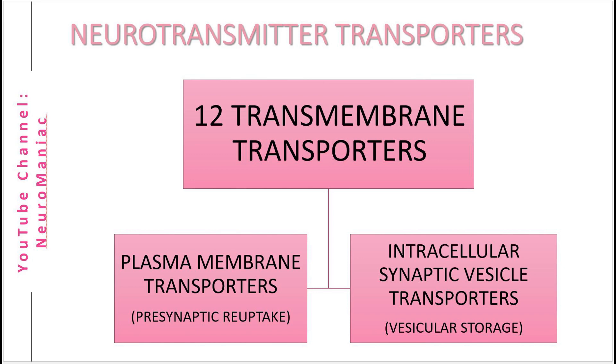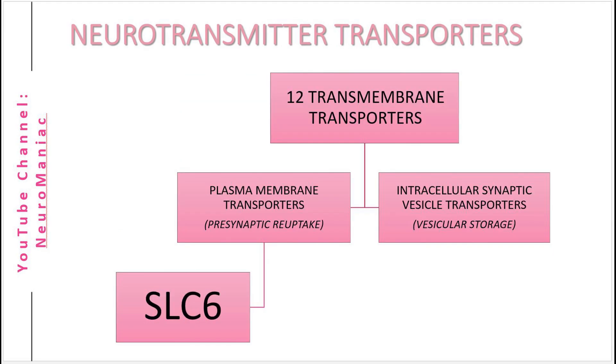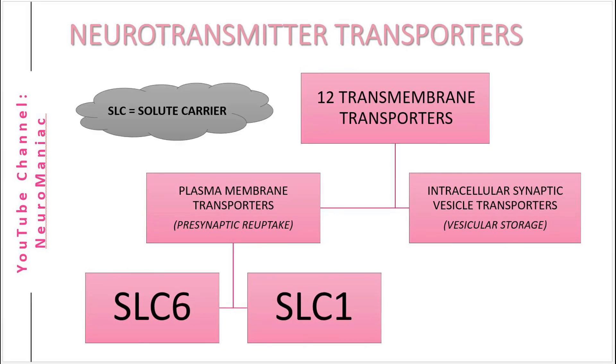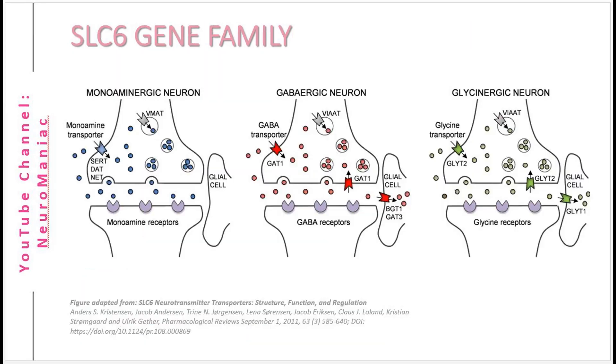Now, let's build on our chart. Plasma membrane transporters are further broken down into two subclasses known as SLC6 and SLC1 gene family. SLC stands for solute carrier, meaning they are ion coupled. In this case, sodium and chloride coupled transporters.